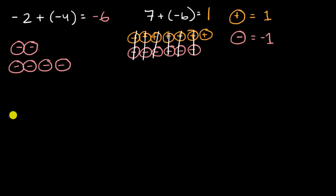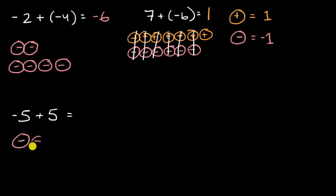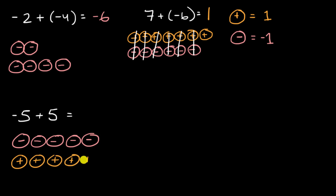Let's do another example. Negative five plus five — you might already suspect what that is, but try to represent it with integer chips. Well, negative five is five of these negative integer chips, and positive five is five of the positive integer chips. Those add up to zero, those add up to zero, those add up to zero, those add up to zero, those add up to zero. So you're just adding a bunch of zeros, which is of course going to give you zero.